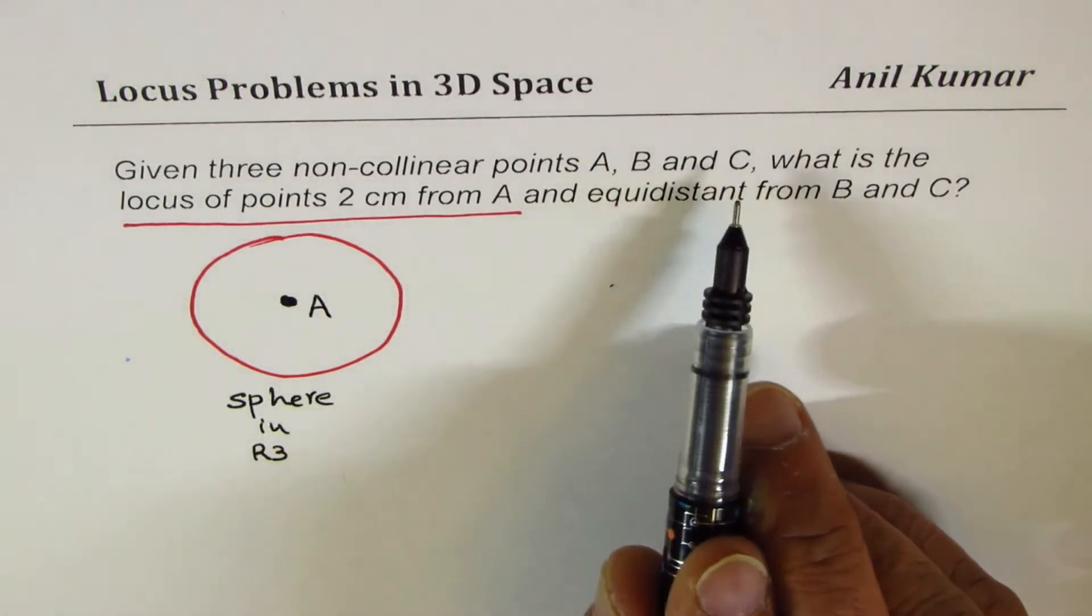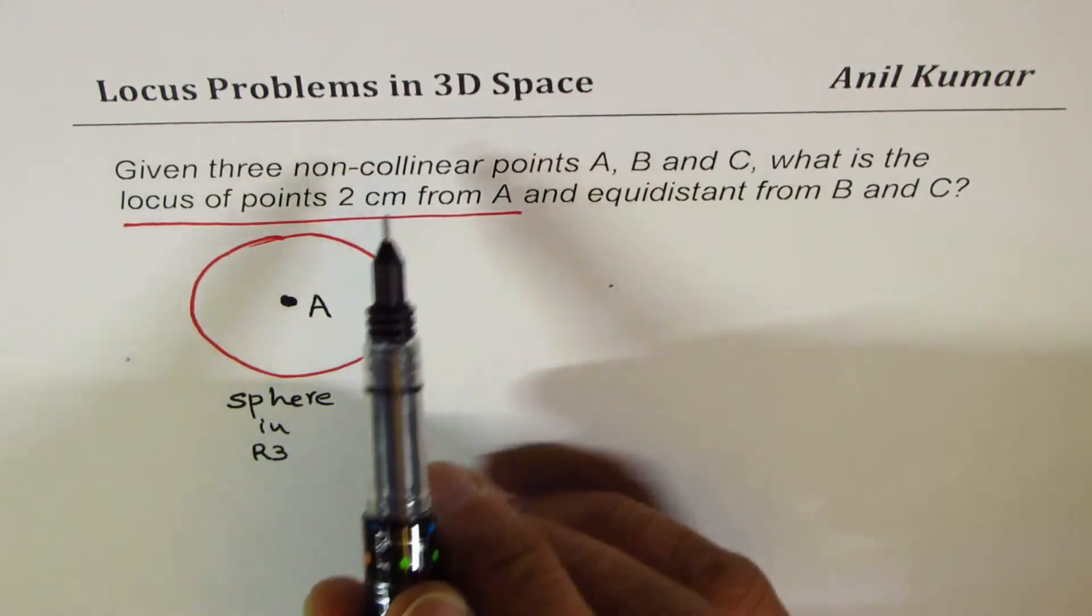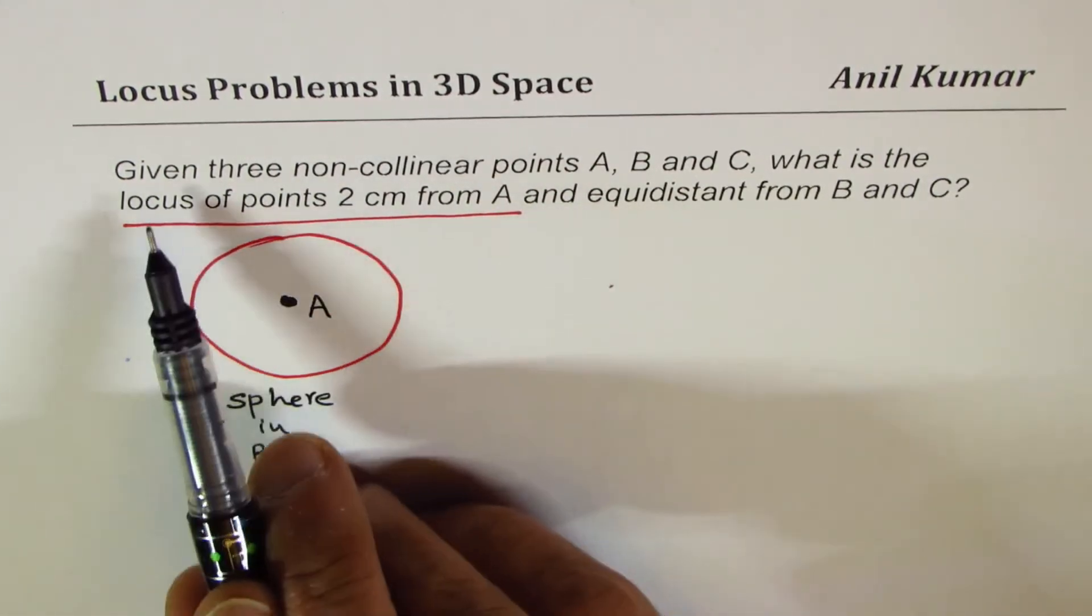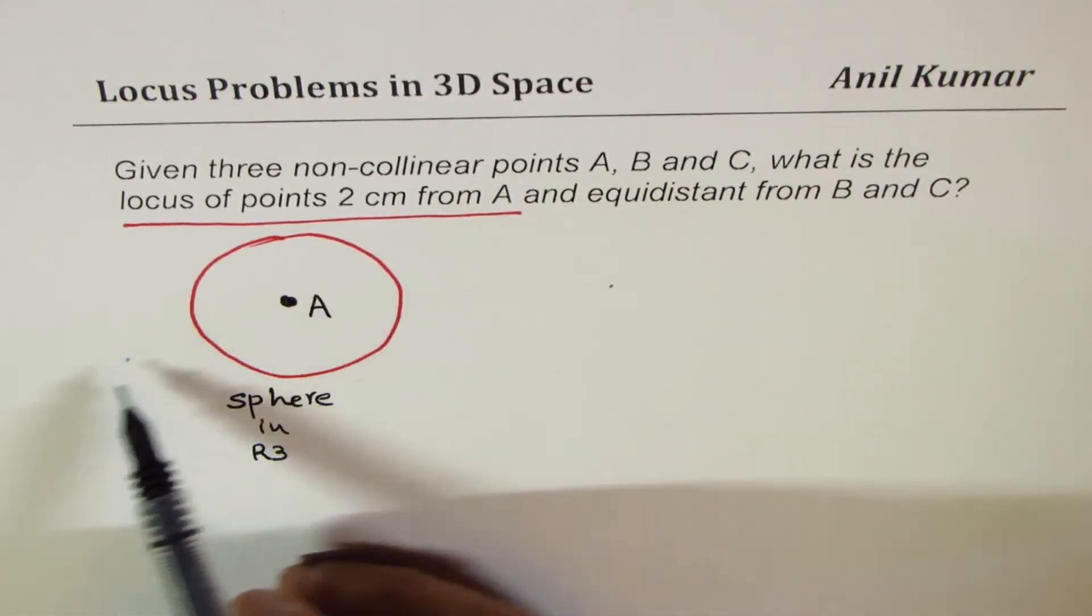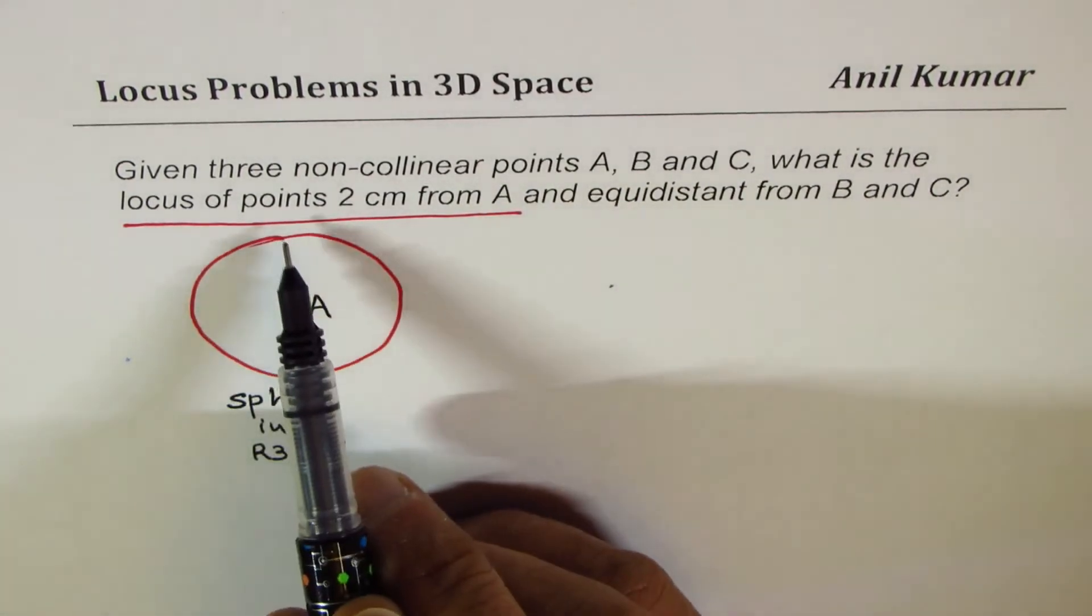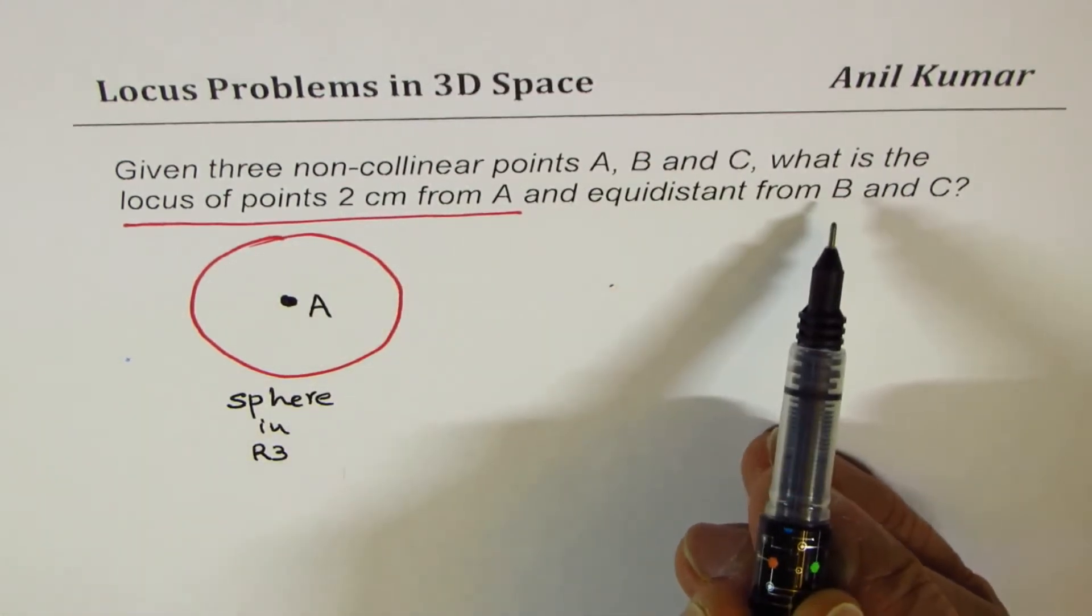Now, if we have 2 other points B, C, we want intersection, right? Given 3 non-collinear points A, B, and C, that means they are not in a straight line. What is the locus of points 2 cm from A and equidistant from B, C?